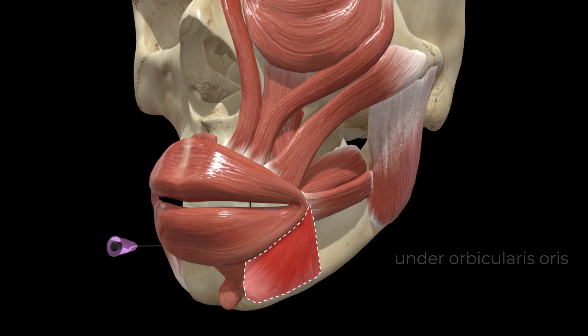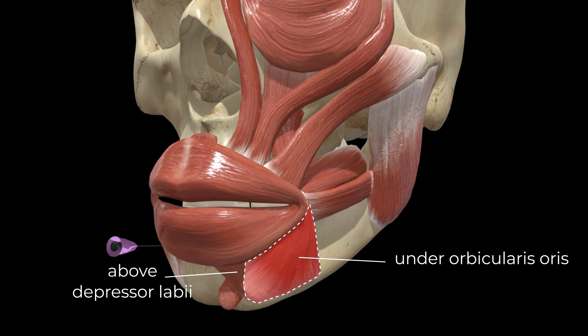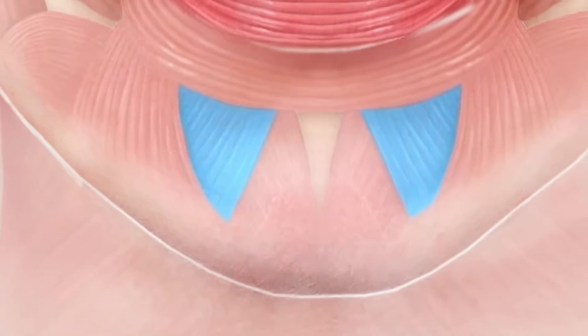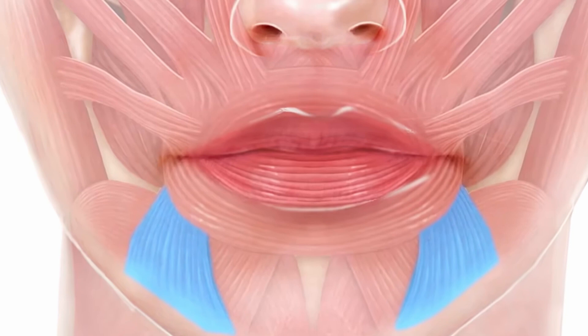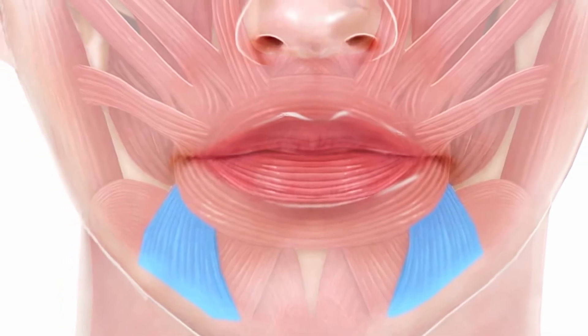The next area is the depressor angularis oris. This muscle pulls the corner of your mouth down. It's also layered in a particular way with the depressor labiae muscle. If you don't know which is which, you'll soon find out when your patient comes back unhappy because you've hit the depressor labiae muscle and not the depressor angularis oris. So we need to first establish the position of injecting, which I do by feeling for the lateral aspect of the contracted depressor angularis oris muscle. But the next thing is to know about the depth.